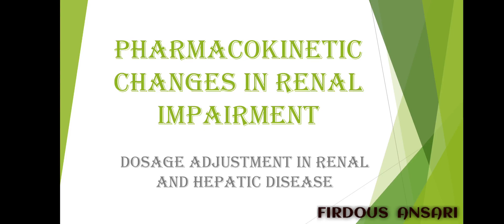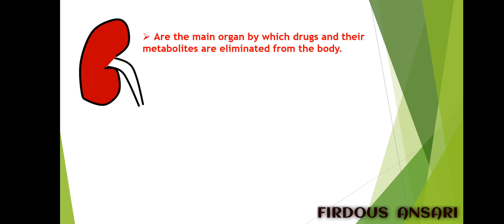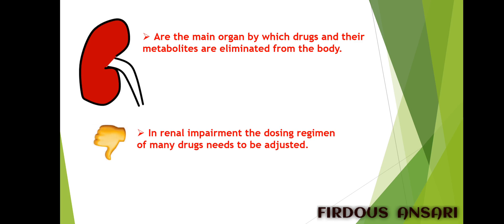Hello to all new students. Today we are going to discuss pharmacokinetic changes in renal impairment — what kind of pharmacokinetic changes will take place in patients with renal impairment. The kidneys are the main organ by which drugs and their metabolites are eliminated from our body. Renal excretion is the major route of drug excretion, and when the kidneys are not working well, the dosing regimen of many drugs needs to be adjusted because there are chances of drug accumulation and thereby drug toxicity.